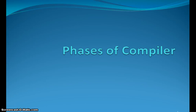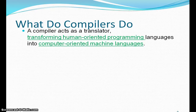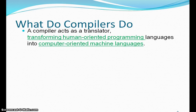Let's start to discuss the phases of compiler. First we'll discuss what a compiler is. Basically, a compiler is a type of translator which converts human-oriented programming language, that is called higher level language, into machine-oriented or computer-oriented language, that is known as machine level language. In simple words, a compiler converts higher level language into machine-understandable language, that is binary language in the form of 0 and 1, which only a machine can understand.